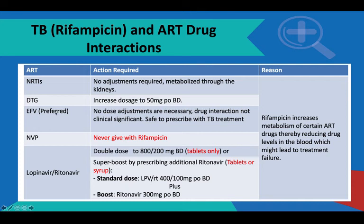Efavirenz is the safest. You don't need to adjust the dose, and where possible, most of your TB/HIV co-infected patients — as long as there are no contraindications to efavirenz — you should try and give them efavirenz.